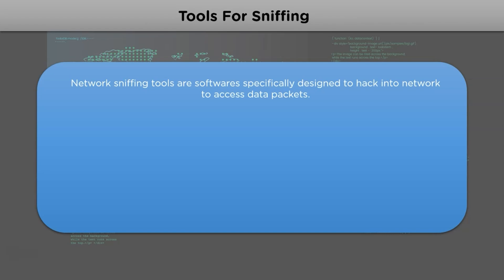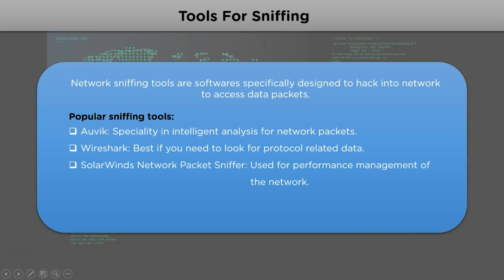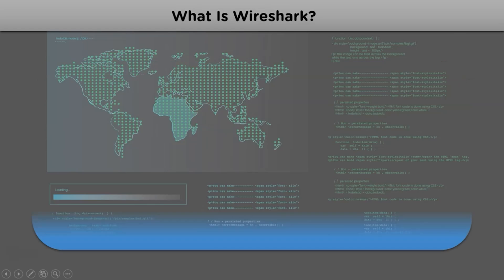Let's take a look at different tools suitable for sniffing. Network sniffing tools are software available on the internet that can be used to sniff into the network. The first one is Awake, a network sniffing tool specializing in intelligent analysis of network packets. Next is Wireshark, best for looking into protocol-related data packets transmitted over the network. Lastly, SolarWinds Network Packet Sniffer is best for performance management.